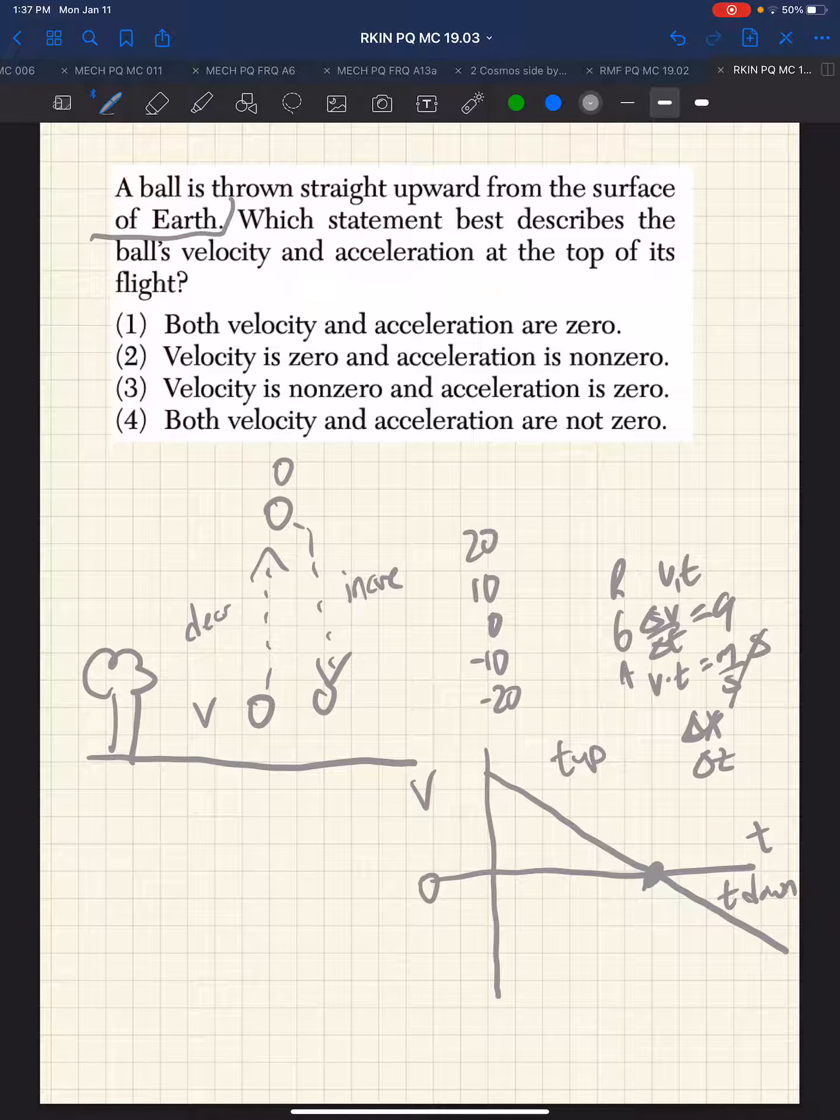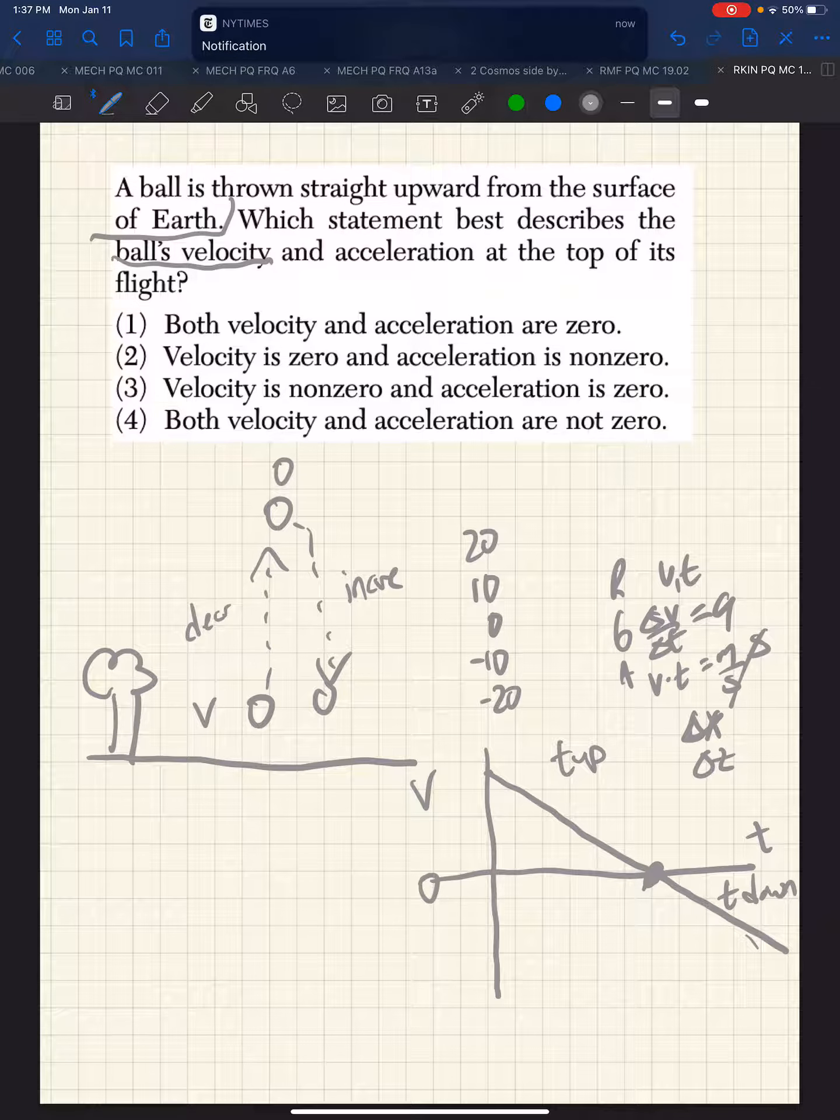So now, this is the work we did to start off before we even read the question. Which statement describes its velocity? So let's first of all say its velocity - its velocity decreases to zero and then increases to a negative.